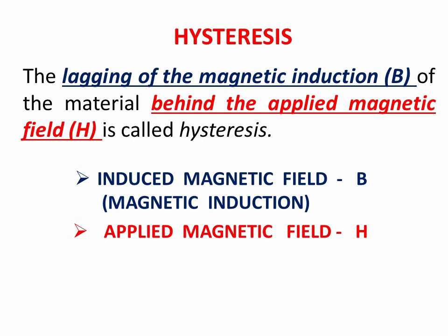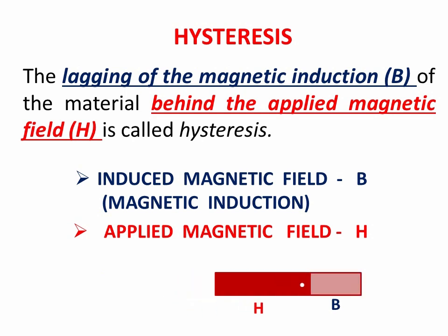The following animation will explain what H and B are. Consider a bar magnet having magnetic field H — this is the applied or external magnetic field. On the right-hand side, a ferromagnetic material strip, for example a steel plate, is present. It does not have any magnetic property initially. When the bar magnet moves towards the steel plate, the steel plate becomes a magnet, and this induced magnetic field in the strip is capital B.